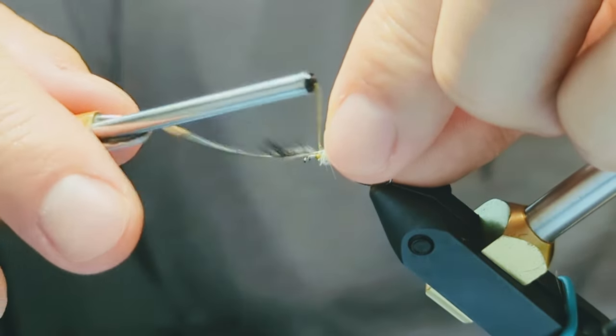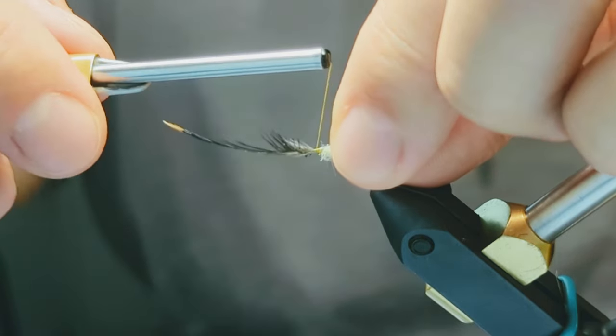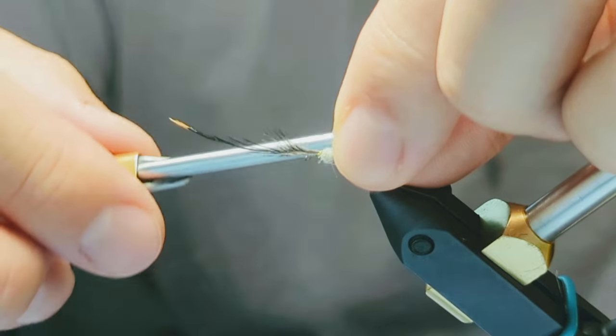Orient your feather so that it is concave up, meaning it dishes upwards like a smiley face. You want the dull side of the feather facing up and the shiny side facing down.